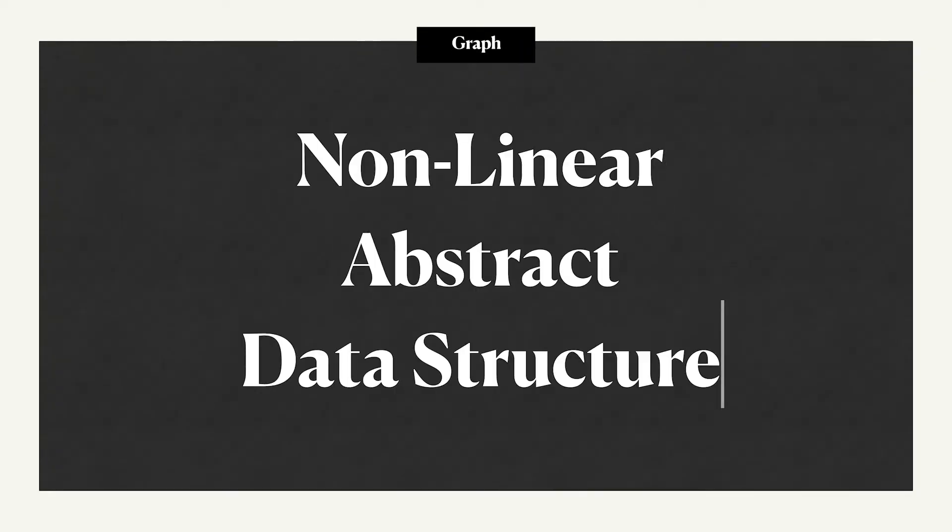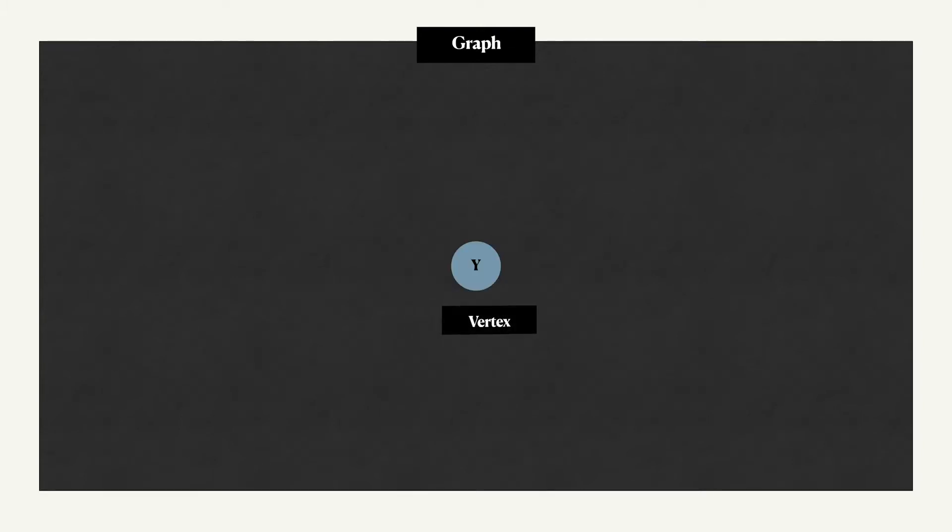A graph is a non-linear and abstract data structure, meaning it is defined by its behavior and not by the underlying mathematical model. It consists of a set of nodes, also known as vertices.